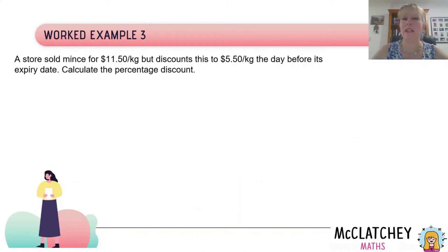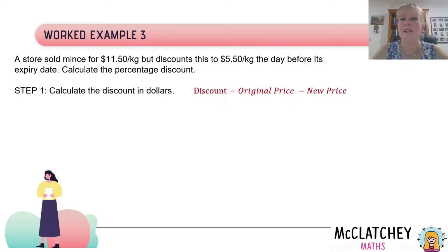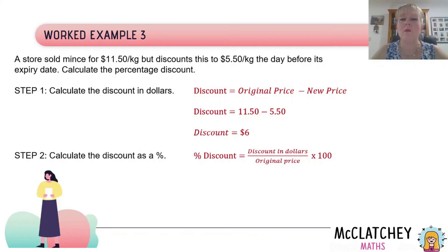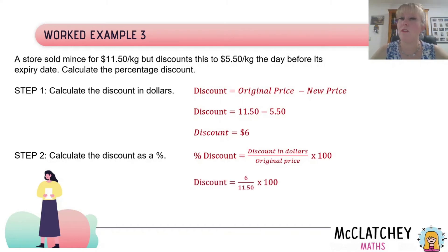Worked example three: a store sold mints for $11.50 a kilo but discounted them to $5.50 a kilo the day before the expiry date. Calculate the percentage discount. First, the discount in dollars equals the original price minus the new price: $11.50 minus $5.50 equals $6. Then the percentage discount equals the discount divided by the original price: $6 divided by $11.50, multiplied by 100, giving a discount of 52.17%. That is an amazing saving!